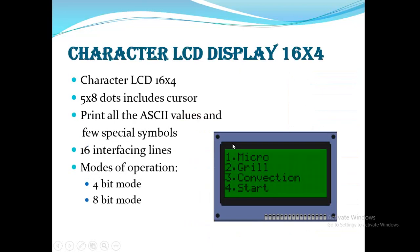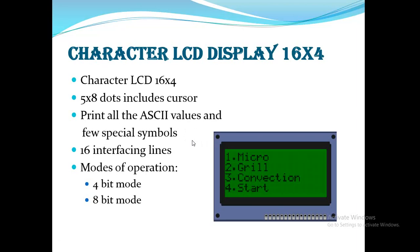The character liquid crystal display (CLCD) used is 16x4 — four rows and 16 columns, allowing 64 characters to be displayed. Each character is formed by a 5x8 dot matrix. It can display all ASCII values and some special symbols. It has 16 interfacing lines and can operate in 8-bit mode or 4-bit mode.